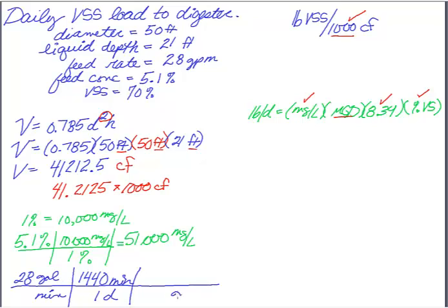And then gallons is on top, and I need to turn that into million gallons. So there are, for every 1 million gallons, 1, 2, 3, 4, 5, 6 zeros, a million gallons. So that is going to tell me how many million gallons I got going in here. So it's going to be 28 times 1,440 divided by a million.